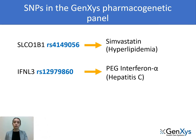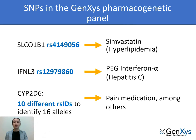Another example is RS12979860 in the IFNL3 gene. Compared to patients with no changes at this specific position of the IFNL3 gene, patients with this variation have a lower likelihood of response to PEG interferon-alpha for the treatment of hepatitis C. For cytochrome P450 enzymes such as CYP2DS, several SNPs need to be evaluated in order to correctly predict how a patient will respond to a drug depending on their genetic information. The genotype of this series of SNPs is used to define the specific variant form, or allele, of a gene. In the Genetsis Pharmacogenetic Panel, 10 different SNPs are used to identify the 16 alleles of CYP2DS. Depending on the alleles of a patient, we can predict the activity of these genes and make recommendations on the treatment of several drugs.